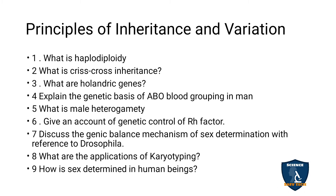Principles of Inheritance and Variation. What is haplodiploidy? What is criss-cross inheritance? What are holandric genes? Explain the genetic basis of ABO blood groups in man — 5 marks. What is male heterogamety? Give an account of genetic control of Rh factor — 5 marks. Discuss the genic balance mechanism of sex determination with reference to Drosophila — 5 marks. What are the applications of karyotyping — 5 mark and 3 mark?